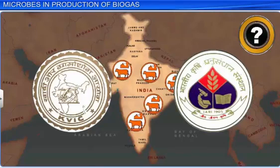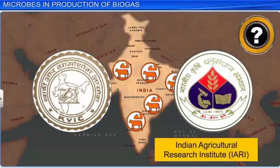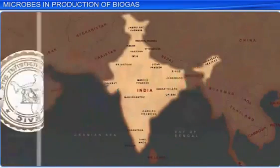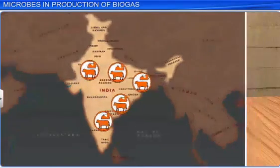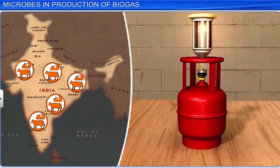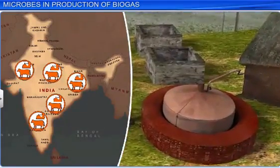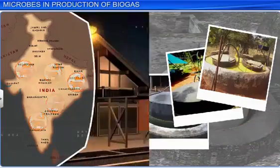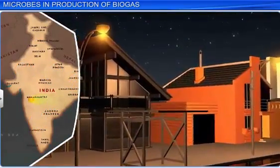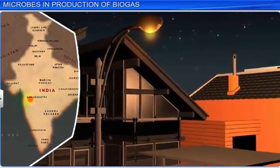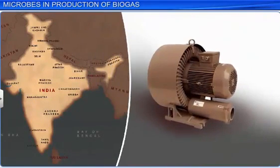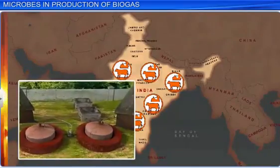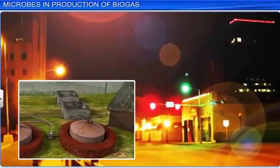Did you know that the technology of biogas production was developed in India by the Indian Agricultural Research Institute, or IARI, and the Khadi and Village Industries Commission, or KVIC? India needs more such biogas plants to have an alternative energy source for LPG, since biogas is a low cost fuel that burns without emitting smoke. As cattle dung is available in abundance in rural areas, many more biogas plants are being set up in our villages. However, even in cities like Pune, there are some commendable instances of lighting street lights with biogas. Biogas can also be used to run electric engines such as pumps, as it causes less air pollution. Therefore, whether a village or city, establishing a biogas plant is an effective way to generate energy from wastes, and this has been made possible by microbial activity.